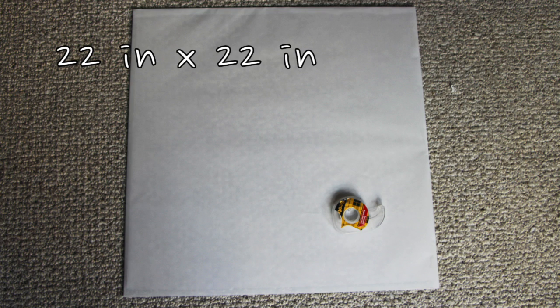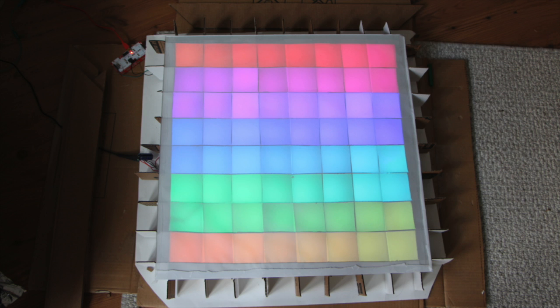The first step to make the touch screen is to tape a piece of semi-transparent white paper to the back of a 22 square inch piece of glass. The paper will diffuse the light from the LEDs and fill up the square lattice.